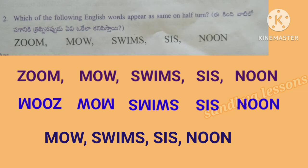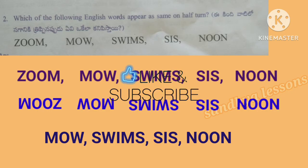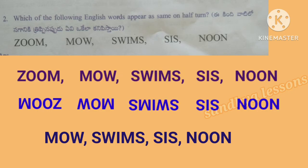Second question: Which of the following English words appear the same on half turn? The words which appear the same on half turn are M.O.W., Swims, Sis, and Noon.